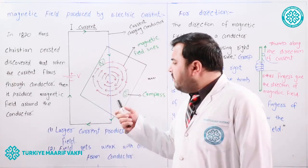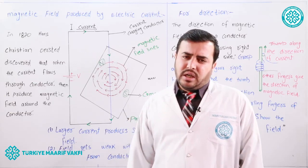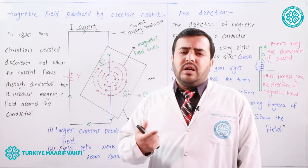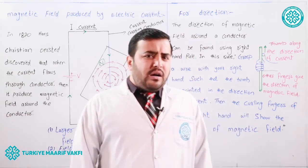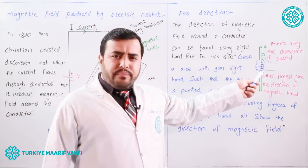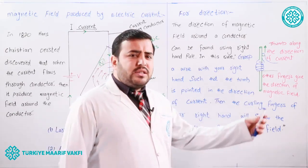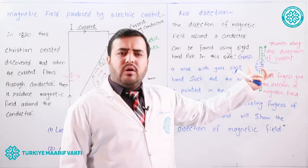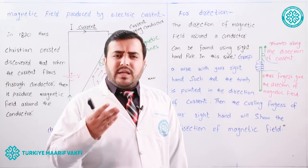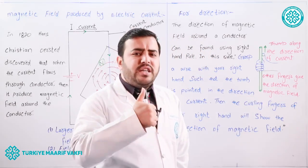Now we will discuss the direction of the magnetic field produced by the flow of electric current through the conductor. The direction of the magnetic field can be found using the right hand rule. Here you can see in this figure we have a conductor in which current is flowing, and it is gripped in the right hand. Grip the conductor in a way that the thumb of your right hand indicates the direction of the current.